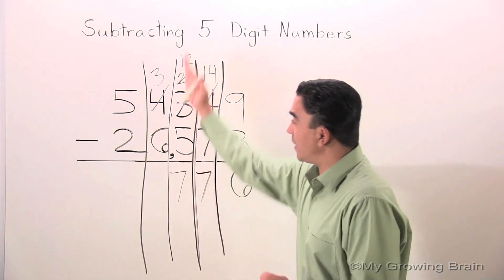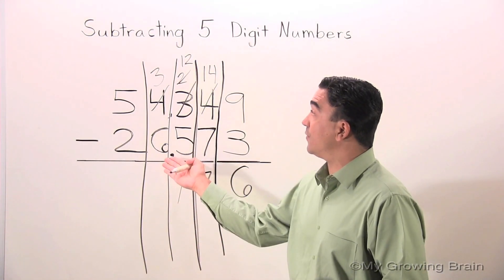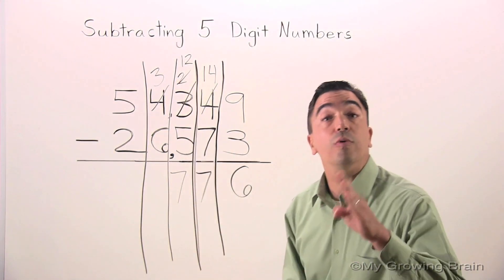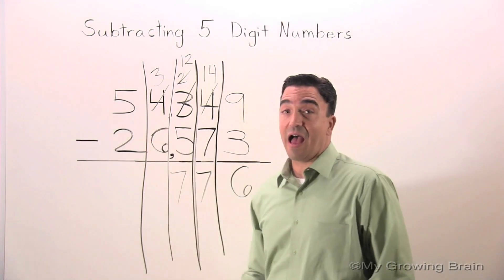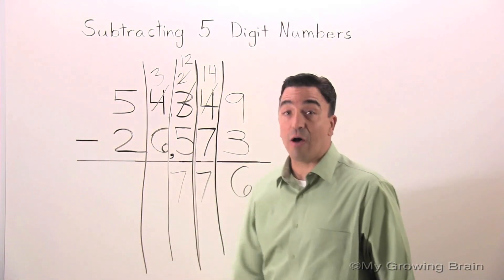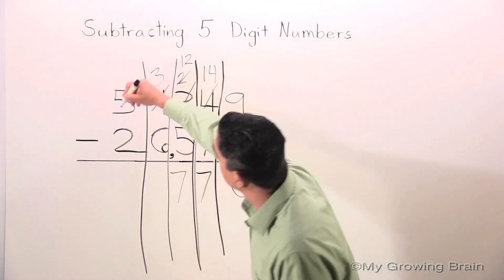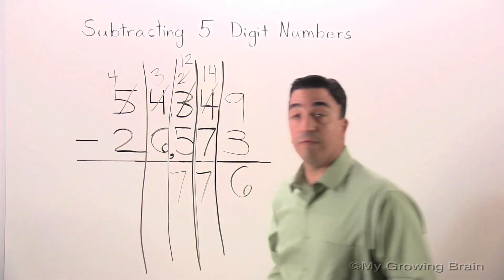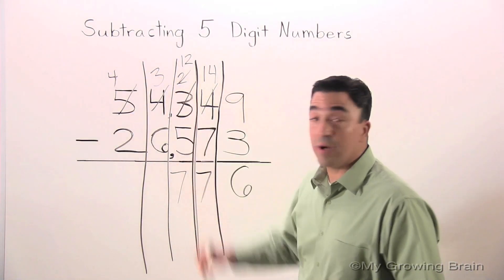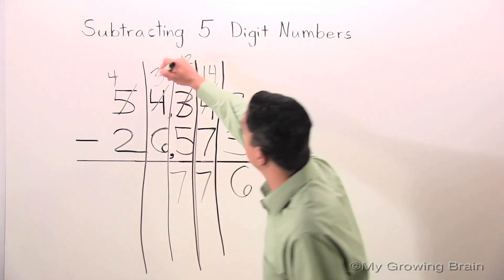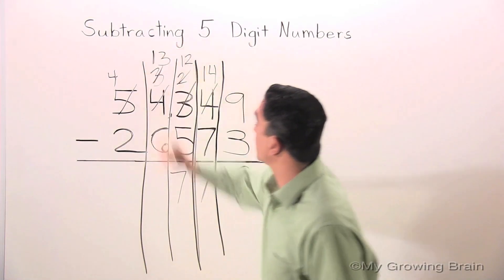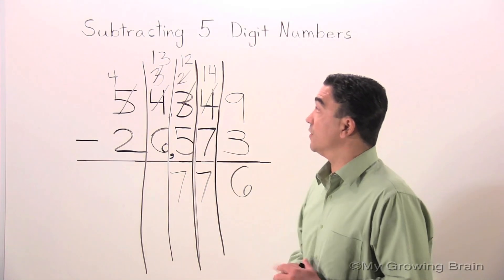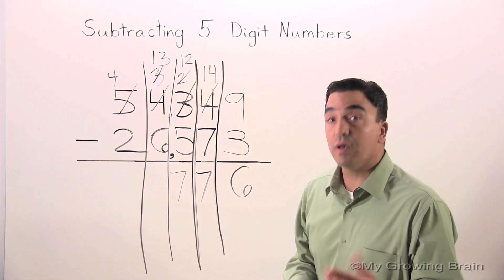Uh-oh, we're in the thousands place, and guess what? Once again, I can't subtract six from three, so I'm going to have to borrow or regroup from the five in the ten thousands place. Take away one from the five, we have four. And our three becomes a 13. Now, I'm going to subtract six from 13, which is seven.